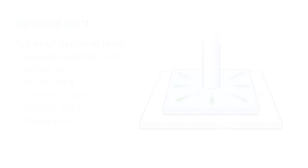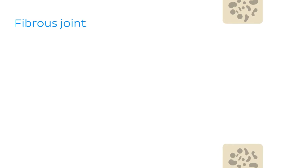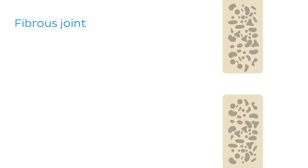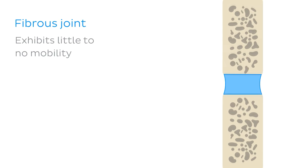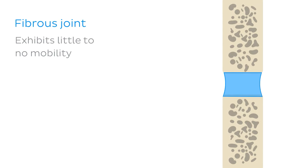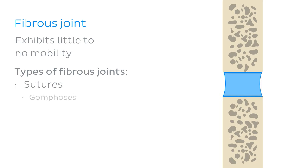Let's move on to our next joint type, which is the fibrous joint. In a fibrous joint, the bones are bound by a tough fibrous connective tissue. These joints exhibit little to no mobility. The types of fibrous joints we're going to talk about today are sutures, gomphoses, and syndesmoses.